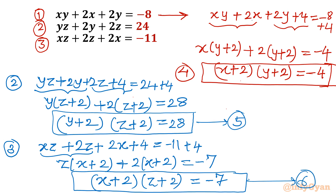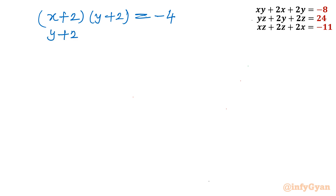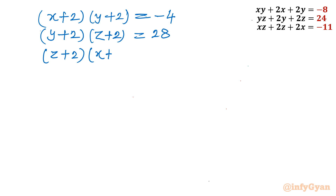Now let me write all three equations together. Equation 4: (x plus 2)(y plus 2) equal to negative 4. Equation 5: (y plus 2)(z plus 2) equal to 28. Equation 6: (z plus 2)(x plus 2) equal to negative 7.